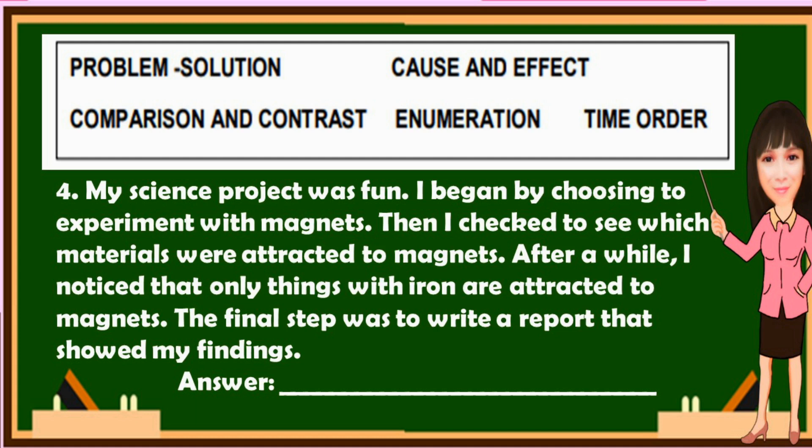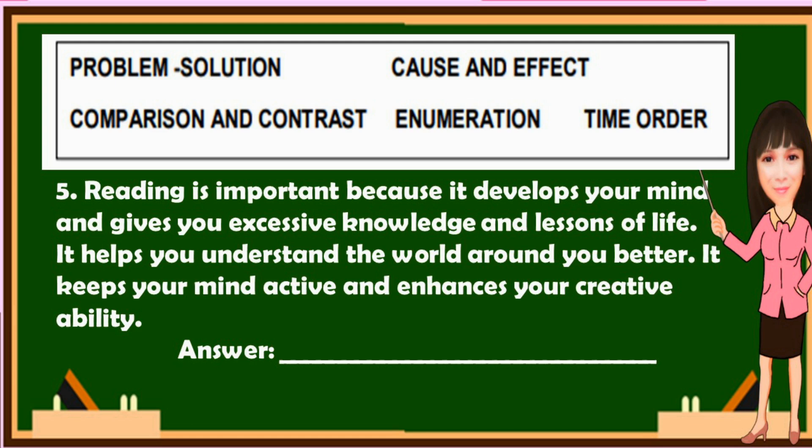Number four: My science project was fun. I began by choosing to experiment with magnets. Then, I checked to see which materials were attracted to magnets. After a while, I noticed that only things with iron are attracted to magnets. The final step was to write a report that showed my findings. The answer is time order. Number five: Reading is important because it develops your mind and gives you excessive knowledge and lessons of life. It helps you understand the world around you better. It keeps your mind active and enhances your creative ability. The answer is cause and effect.